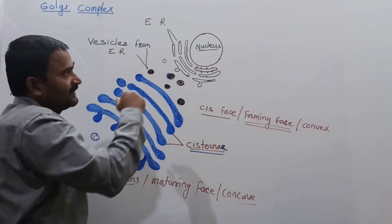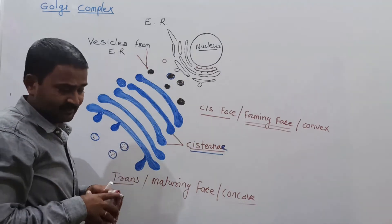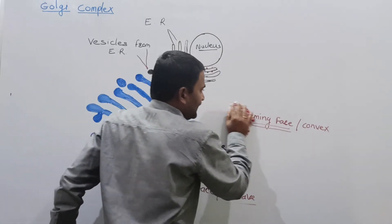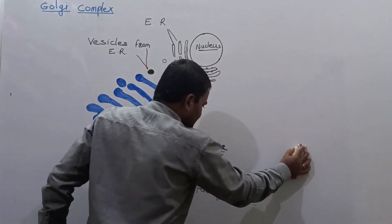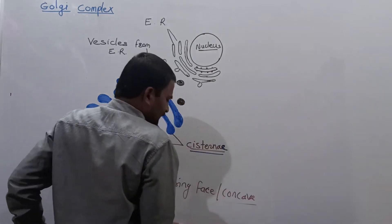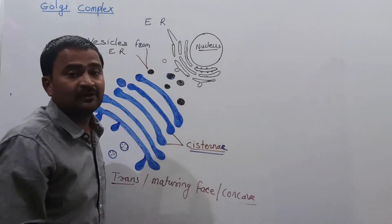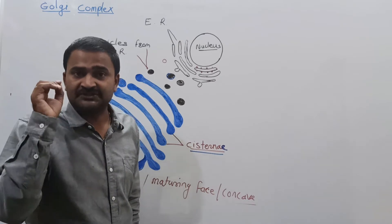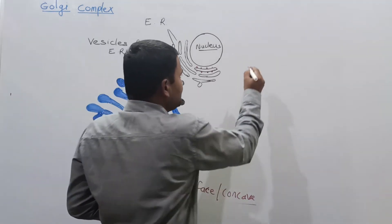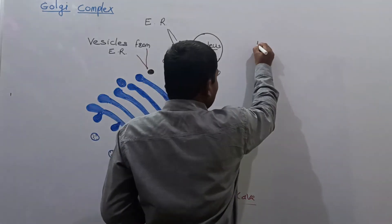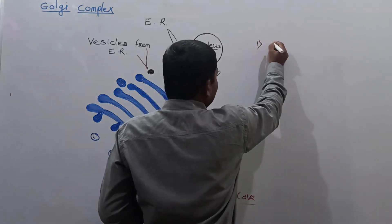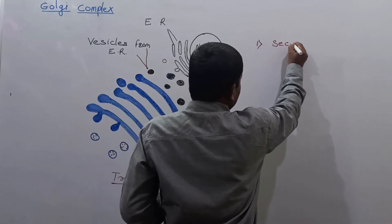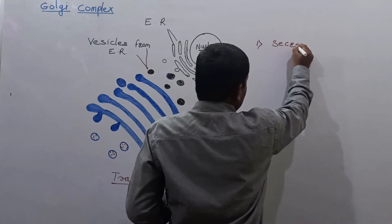Now let us look at the functions of the Golgi complex. The first function is that the Golgi complex is involved in cell secretion.